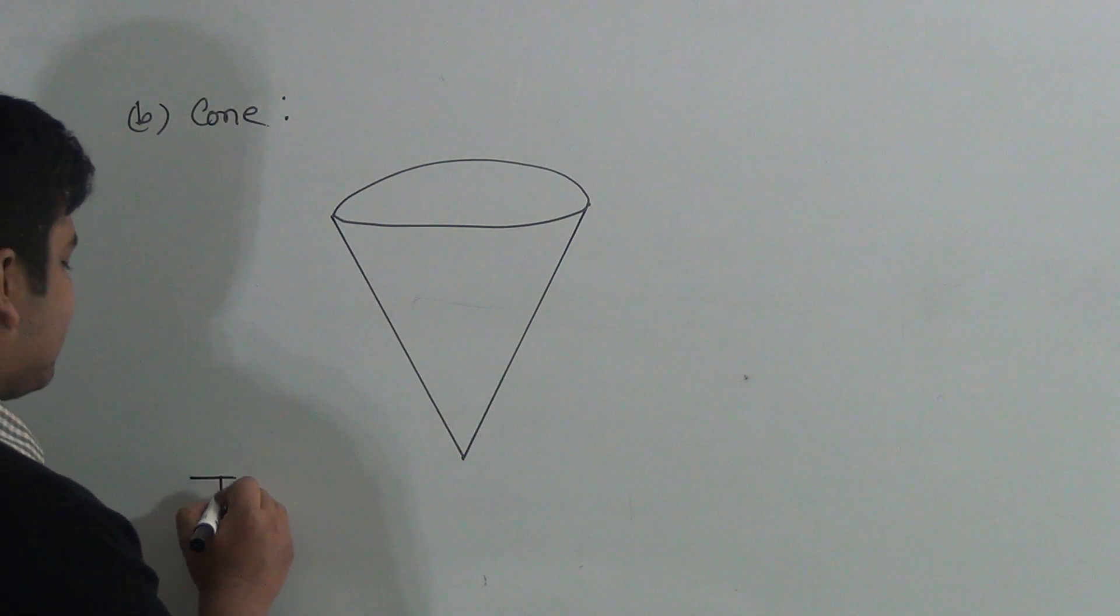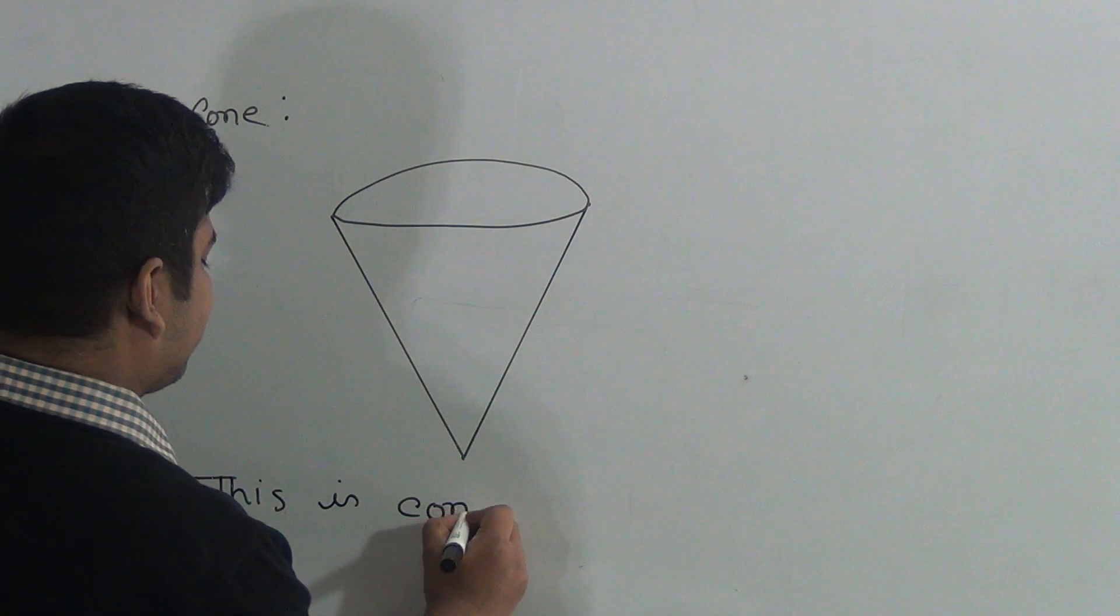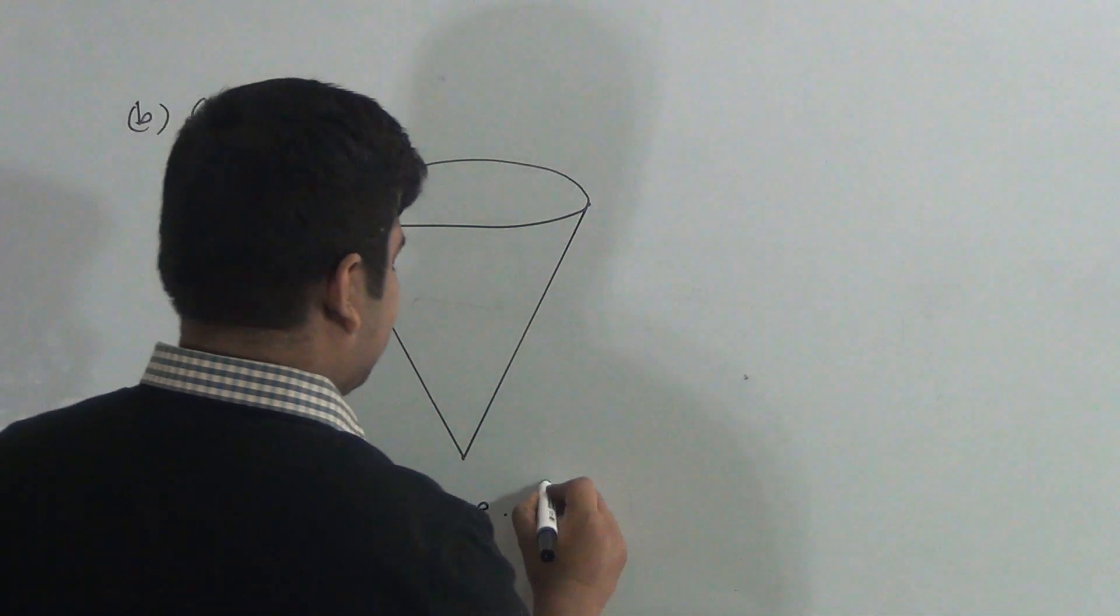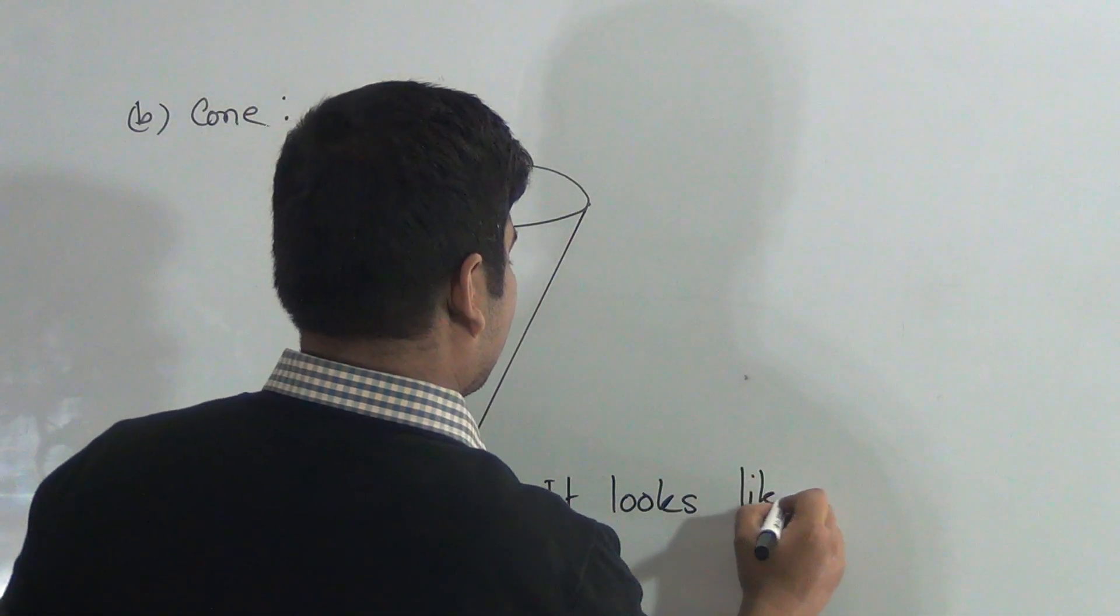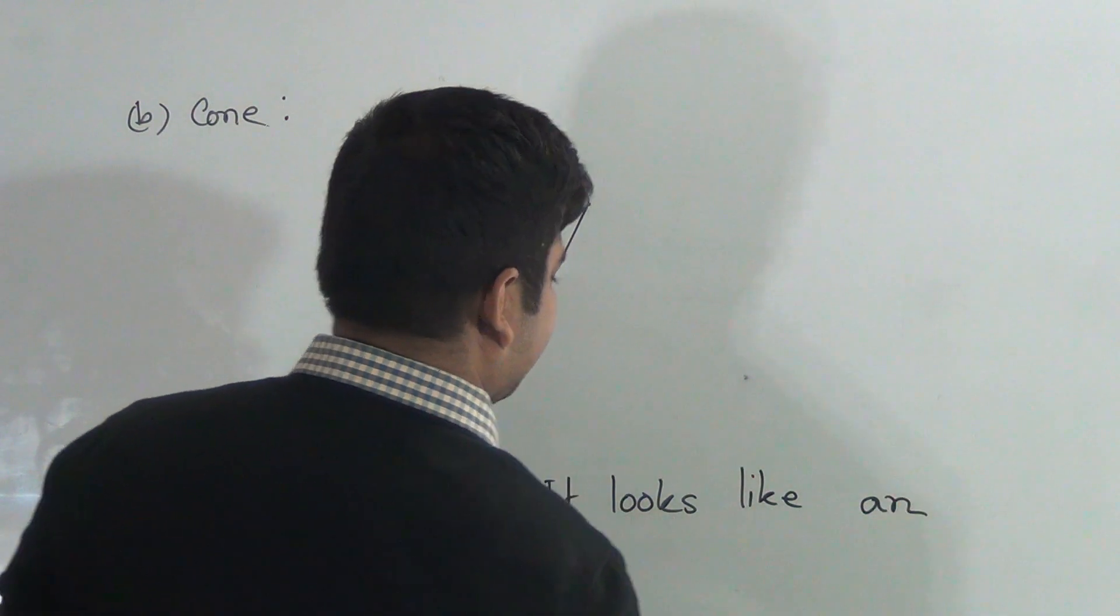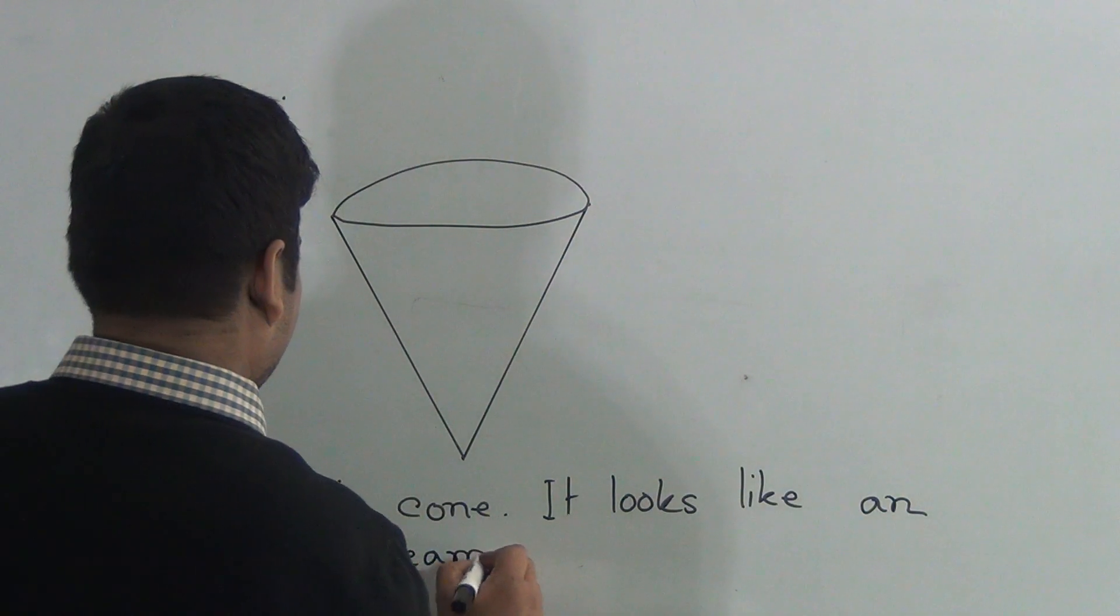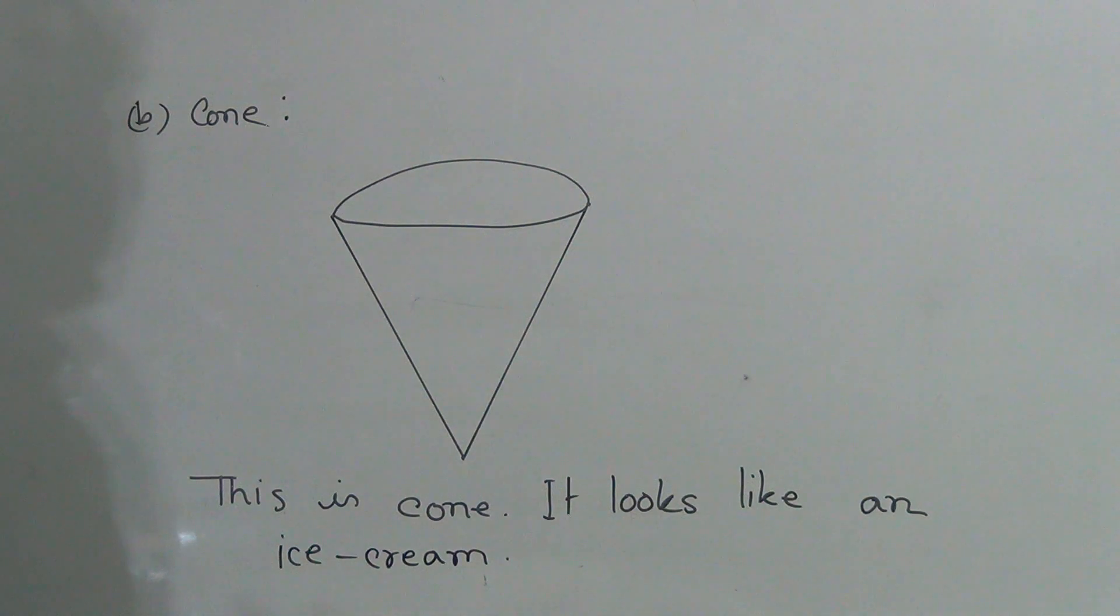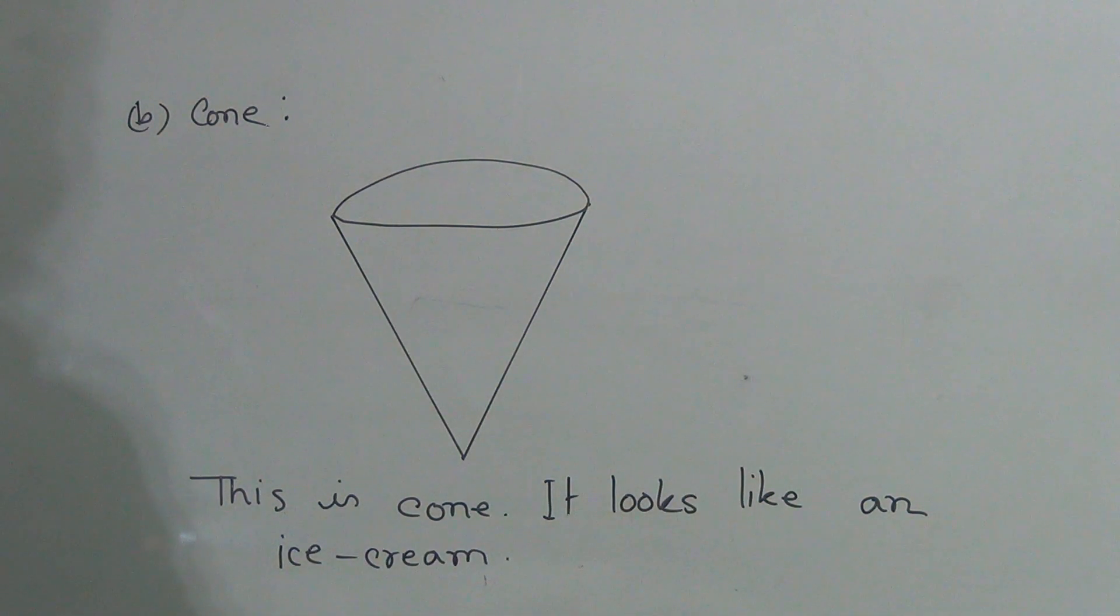So write this is cone. It looks like an ice cream. This is cone. It looks like an ice cream.